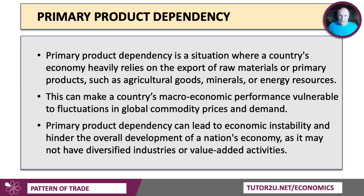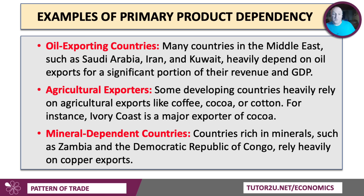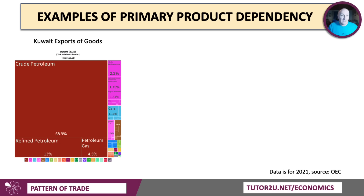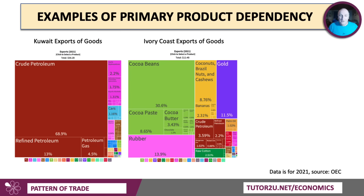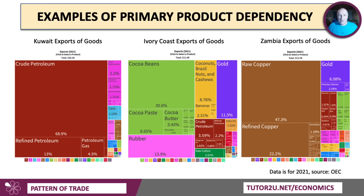This is known as the primary natural resource curse. Many countries rich in natural resources don't necessarily become highly developed, high-income nations, in part because they haven't diversified their industries or value-added activities. Good examples include oil-exporting countries such as Saudi Arabia, Iran, and Kuwait; agricultural exporters like the Ivory Coast, which exports cocoa; and mineral-dependent countries such as Zambia and the DRC, which rely extremely heavily on copper exports. You can see Kuwait's relatively narrow trade pattern, the Ivory Coast's green cocoa dominance, and Zambia's copper dependency clearly in the charts. Bangladesh is another example — not primary products, but a highly dependent export pattern on light manufacturing, particularly textiles, which are hugely important for sales to the EU and USA.